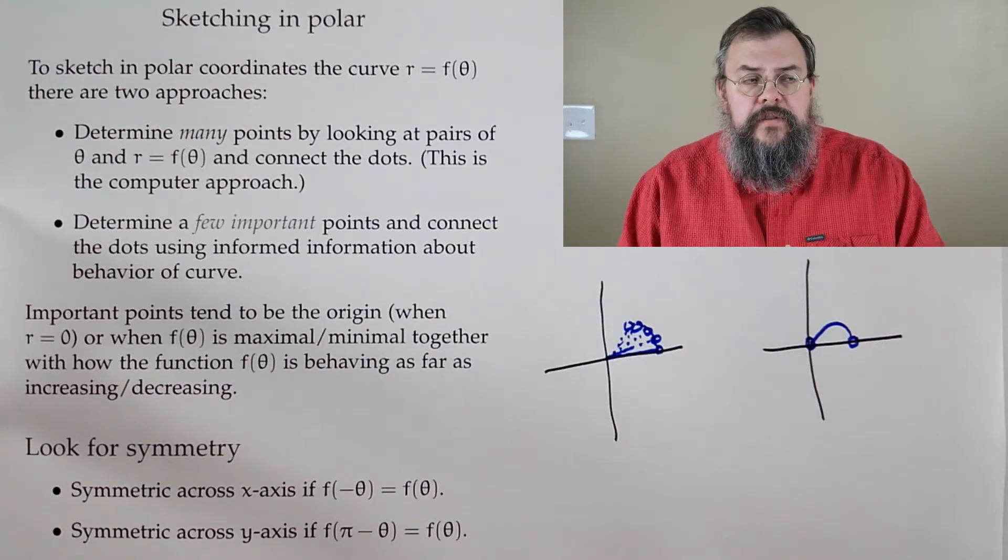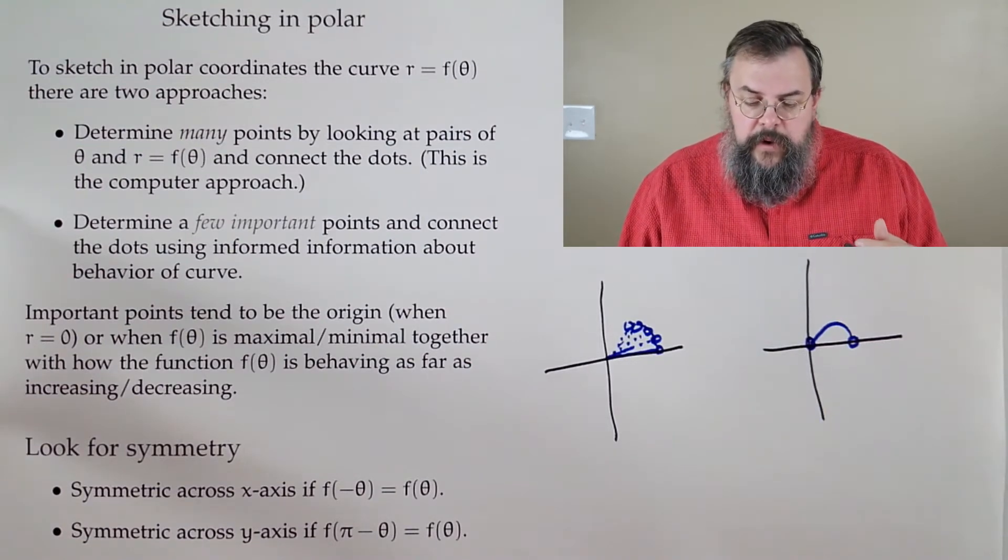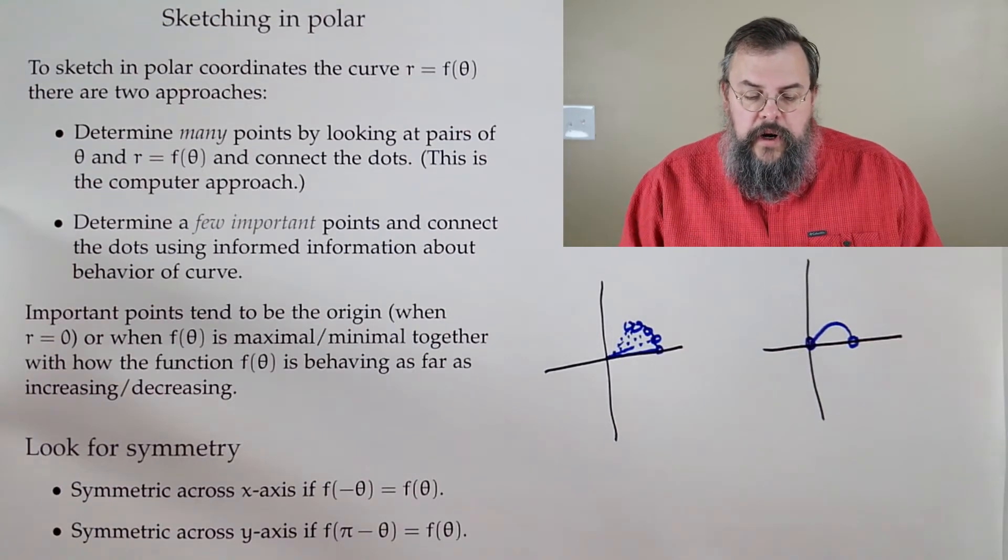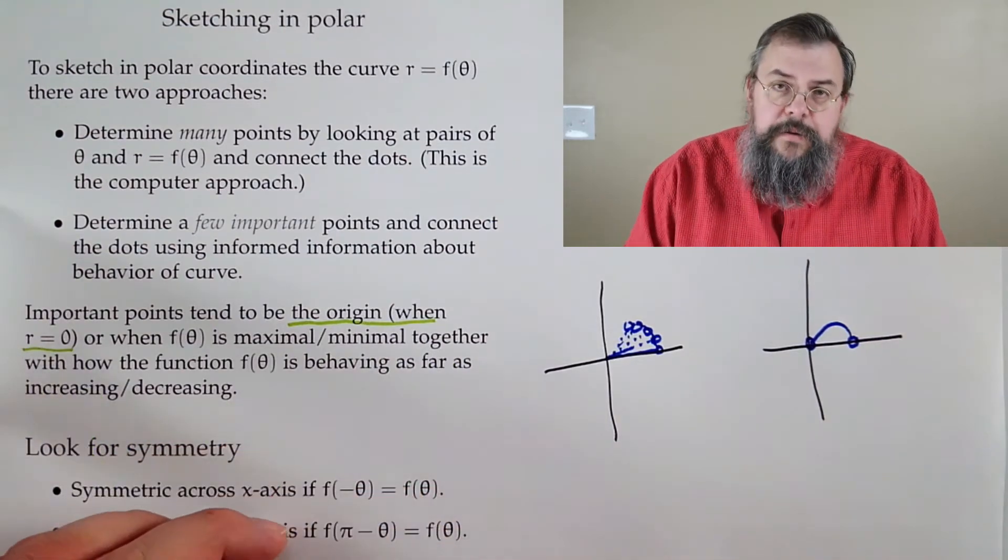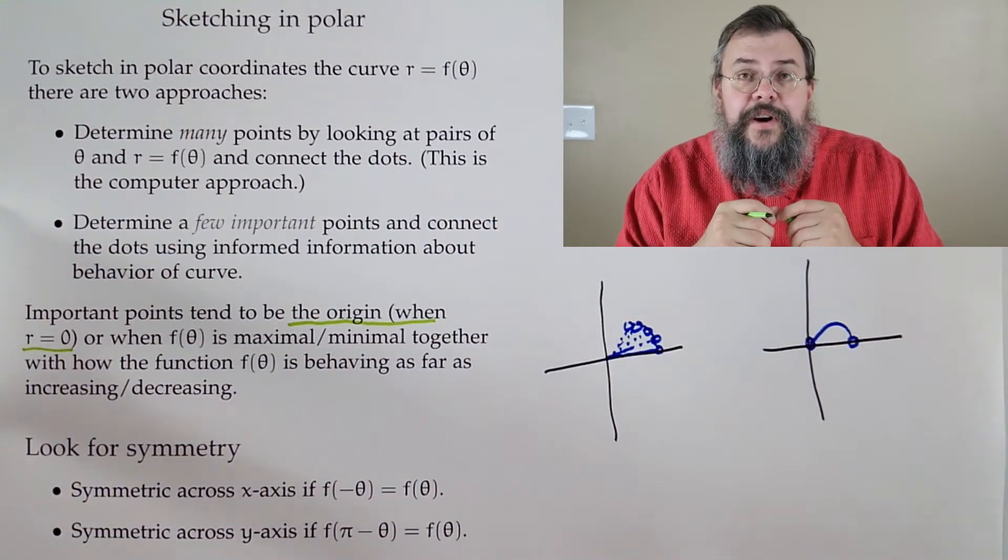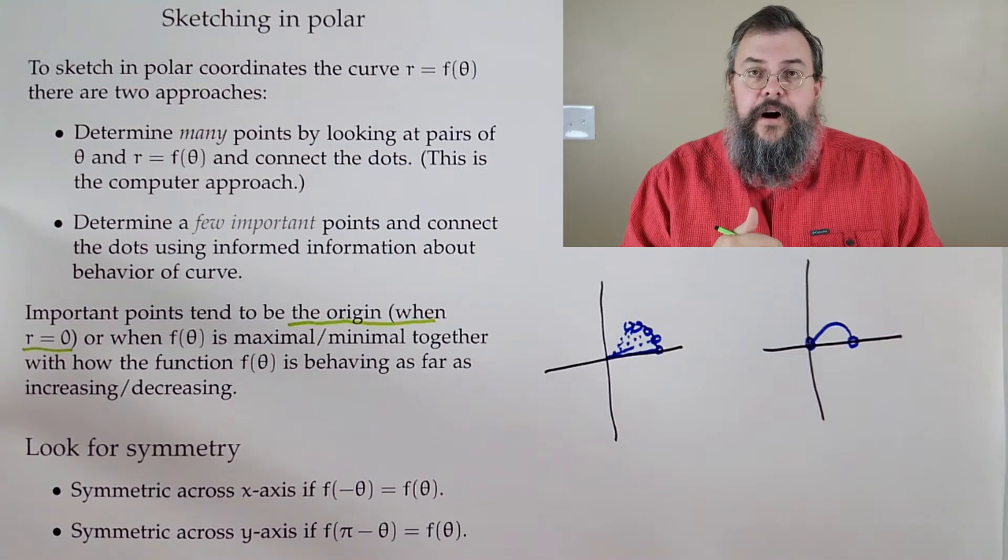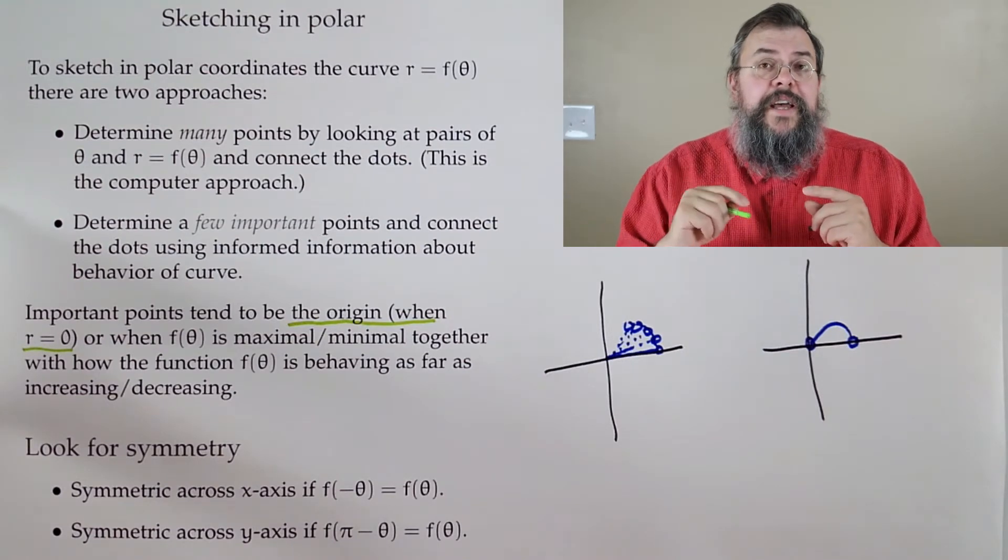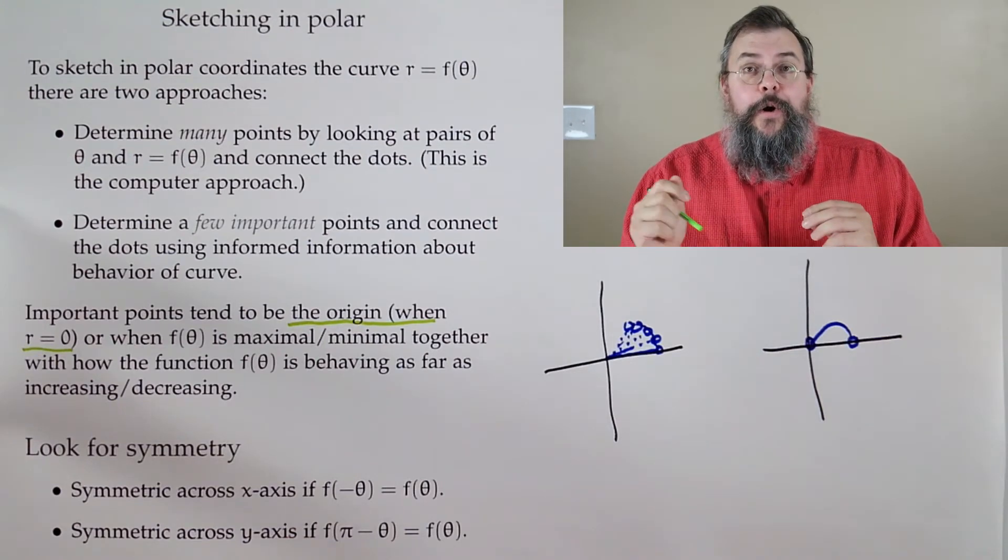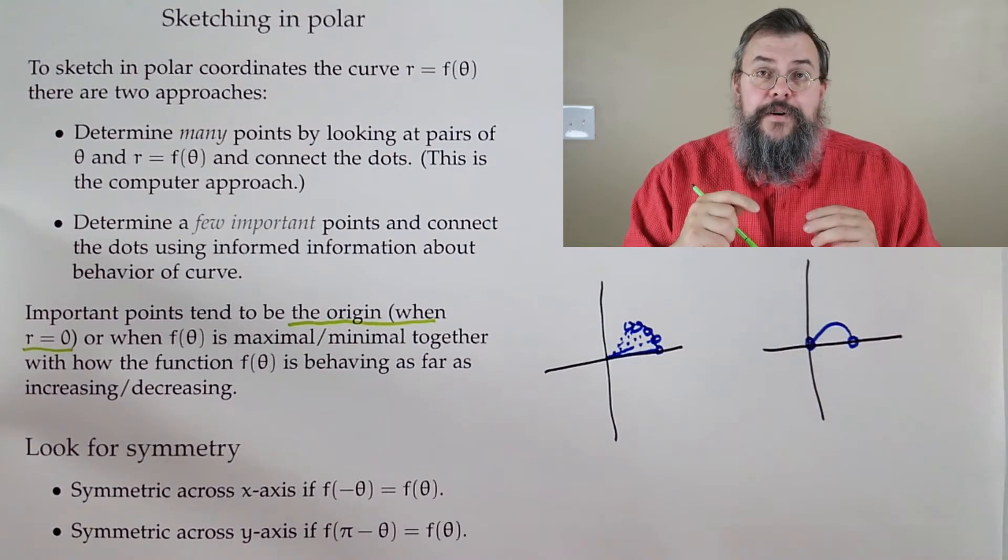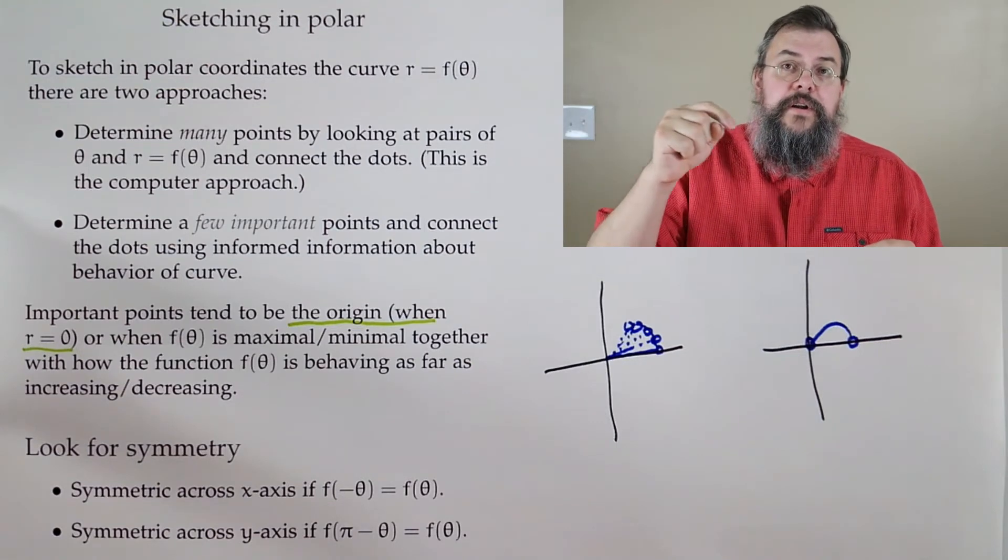You might ask which points are the important points? The origin is important. r equals zero is the center. In some sense, r equals zero is kind of unique in that it doesn't matter what choice for theta you have, you're always going to be at the same point. One thing that can happen is that we could have r go negative, and we'll probably see a few examples of that. Of course, that's when we're going to cross through the origin and interesting things could happen.